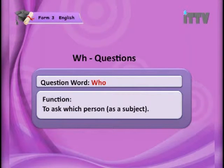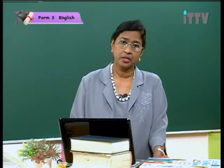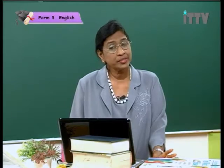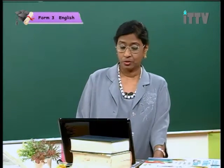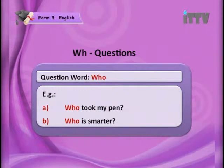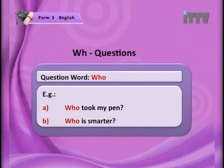The question word 'who' is used to ask which person, and it acts as the subject of the sentence. When you see it as subject, 'who' comes first. For example: 'Who did this to the little boy?' — 'who' is the subject. Another example: 'Who took my pen?' and 'Who is smarter?' These are very easy examples for you to follow.